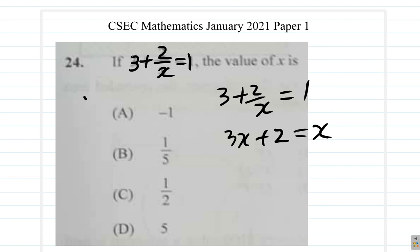If you subtract 2 from both sides, you have 3x is equal to x minus 2. And if you subtract x from both sides, you're going to have 3x minus x equals negative 2.